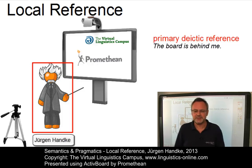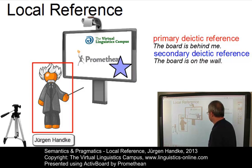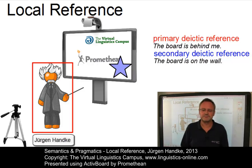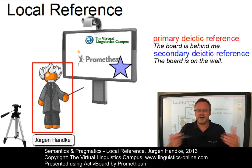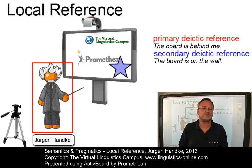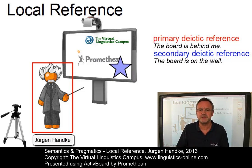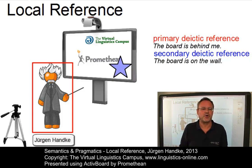In saying 'the board is on the wall,' I have a case of secondary deictic reference. The secondary deictic definition of an object in space uses the speaker as the origin of the coordinate system, but the reference point is another object — the wall. So, seen from my position, the board is on the wall.